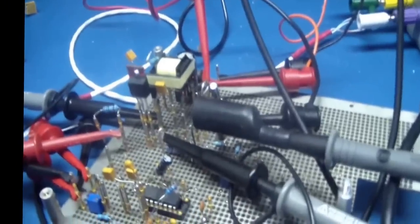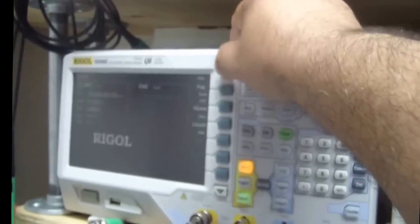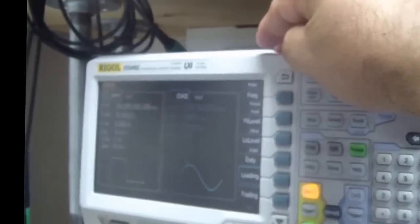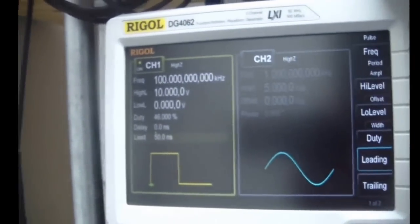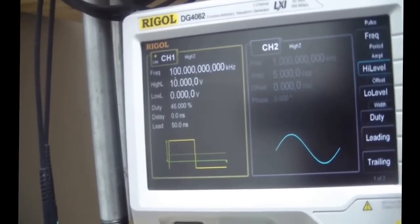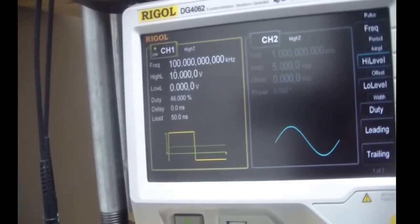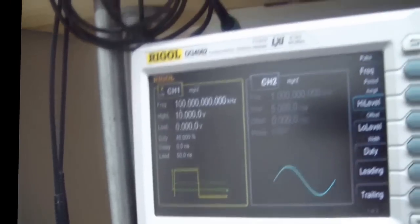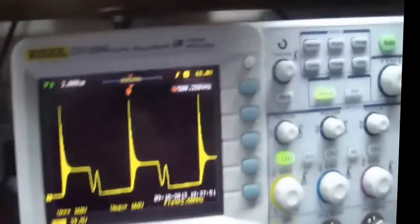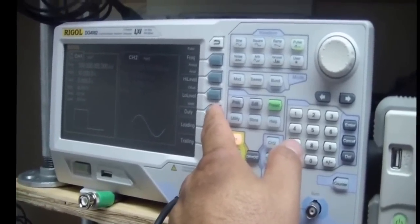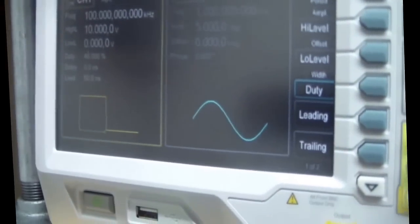The way I'm driving the MOSFET is through right here—I'm actually using my Rigol. And you can see right there that I'm using the pulse. I have it set for 100 kilohertz, with the voltage maxed out—it can only go up to 10 volts. And the low voltage is zero, and I have a duty cycle of 46%.